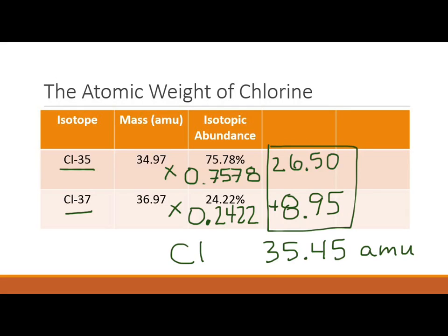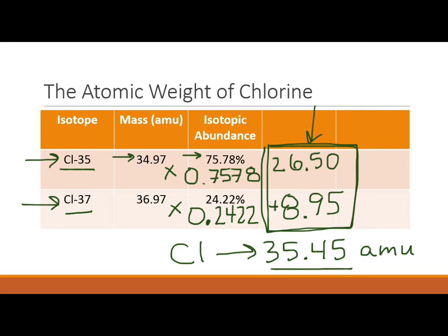If you look at the periodic table, chlorine has an average atomic weight of 35.45 AMUs — this confirms our calculation. If there were five isotopes instead of two, you'd do the exact same process: multiply mass by isotopic abundance for each isotope, then add all five results. One common mistake is dividing the final sum by the number of isotopes — do not do that. Just add up the products and you're done.